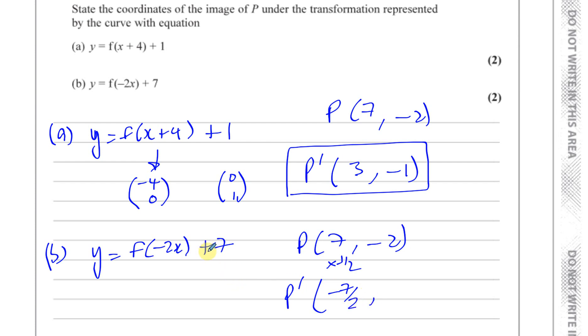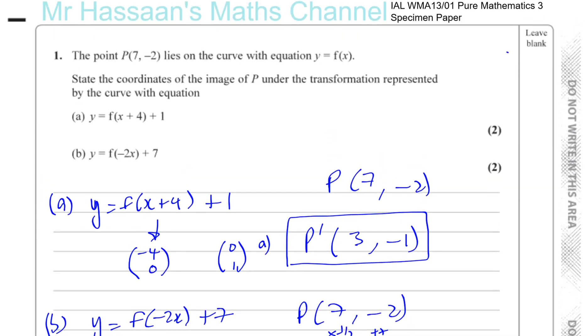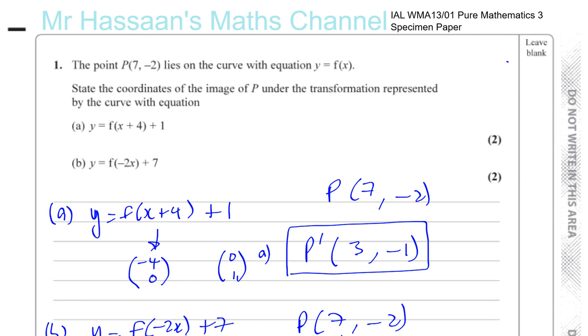And here, the y-coordinate—this is outside the function—you add 7 to the y-coordinate. So we have -2 + 7, which gives you 5. So there we have the image for part B. This is the answer to part A, and this is the answer to part B. That's a pretty simple first question for this specimen paper for the P3.